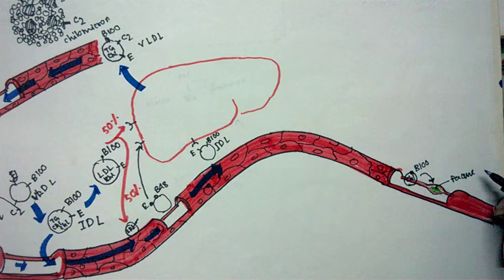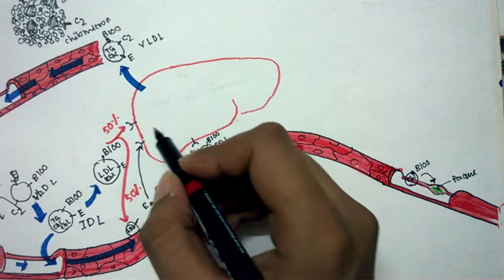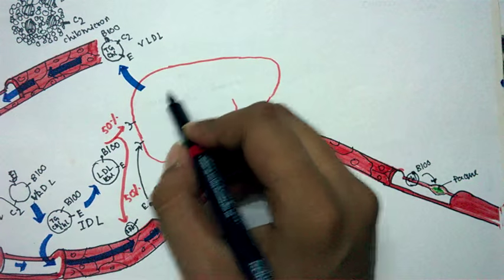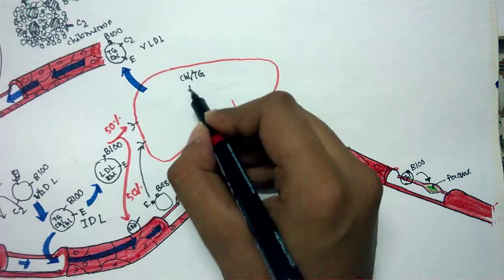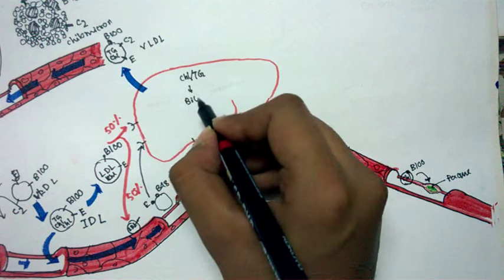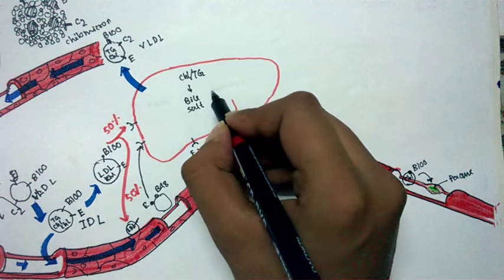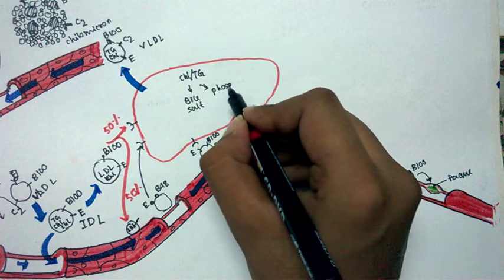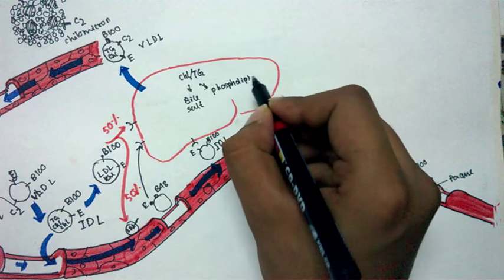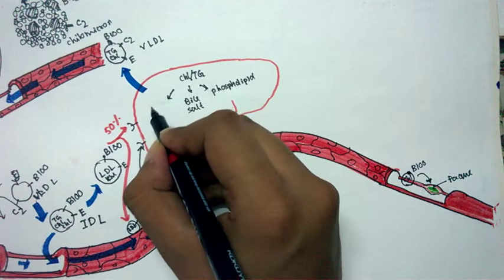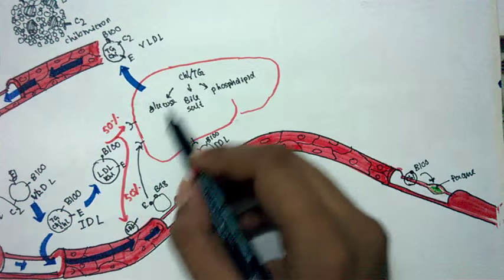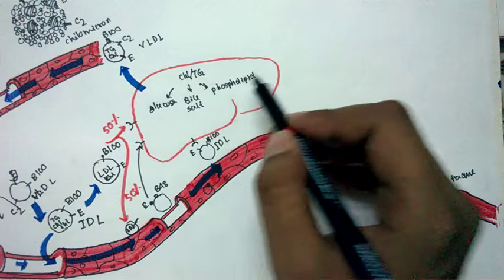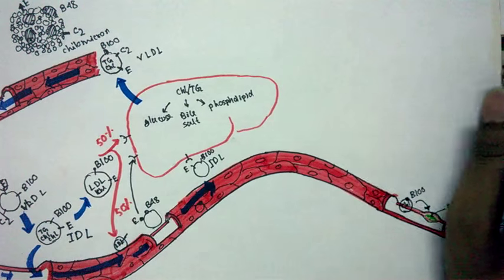When the liver takes up chylomicron remnants or IDL with cholesterol and triglycerides, it uses this material to build bile salts, biosynthesize phospholipids, and from glycerol it can also biosynthesize glucose. This is how these compounds are utilized within the liver.